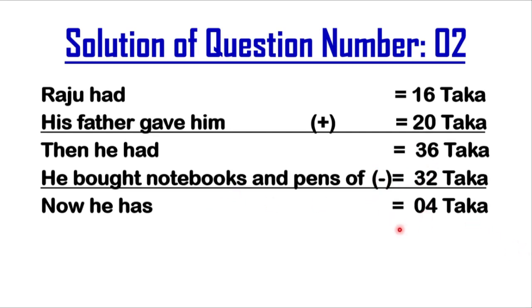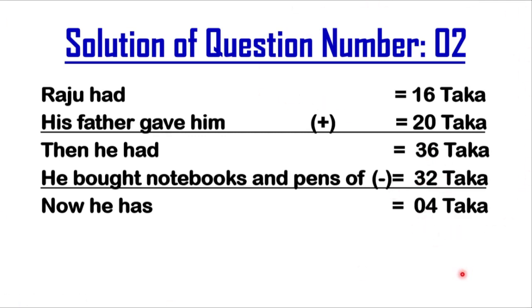In the right column: 6 minus 2 is 4. And 3 minus 3 is 0. So ultimately, the answer of question number 2 is 4 taka — he has 4 taka remaining.